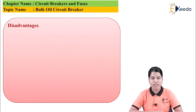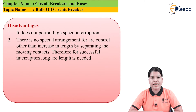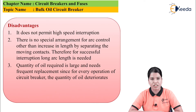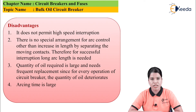Now let us see the disadvantages of the bulk oil circuit breaker. First, it does not permit high-speed interruption of the arc — the process of arc interruption is very slow. Secondly, there is no special arrangement for controlling or interrupting the arc other than increasing the contact separation length, so it does not guarantee successful arc interruption. The quantity of oil required is very large, and the oil needs frequent replacement as its quality deteriorates with each operation. Also, the arcing time in case of bulk oil circuit breaker is very large.